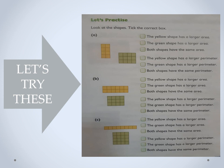So the perimeter of the green shape is fourteen centimeters. The yellow shape does not have a larger perimeter — the green shape has a larger perimeter, so that is true. Both shapes having the same perimeter is not true. Now you'll be able to answer the remaining ones and send me the answers on Class Dojo.